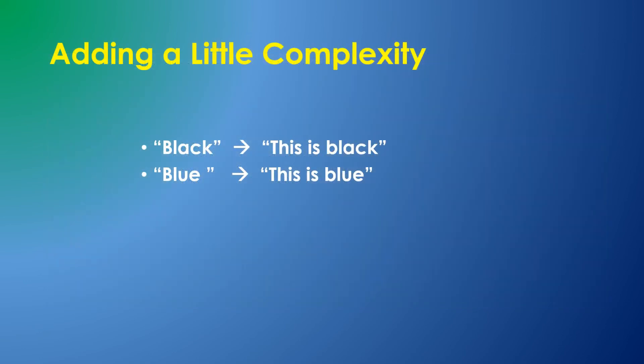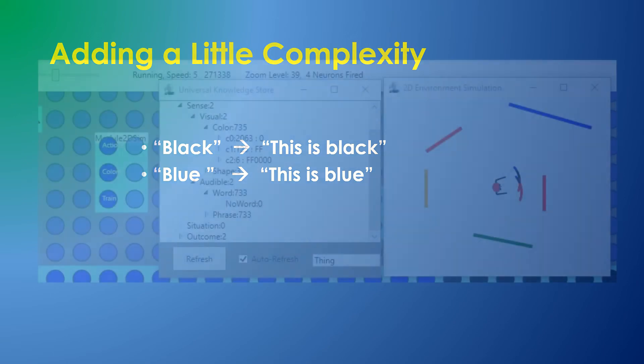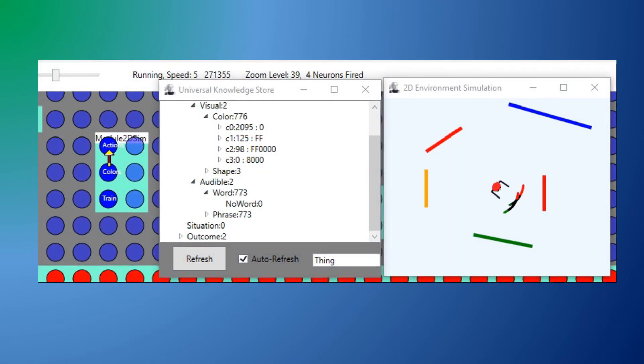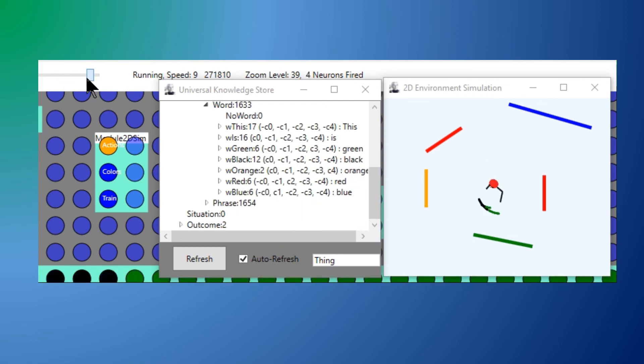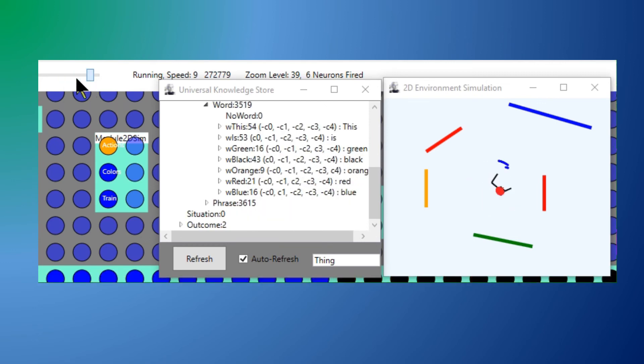In a slightly more complex example, instead of simply saying 'black' or 'blue,' the world simulator sends the phrase 'this is black' or 'this is blue.' When Sally first hears the phrase, the words are completely ambiguous. Sally can have no idea whether the color black is associated with the word 'black' or the word 'this' or the word 'is.' With the speed slider at the top left, I can speed up time to provide Sally with a larger number of samples. Then we can see that once again Sally has figured out that the word 'black' is associated with the color c0, etc., because over time this has emerged as the most likely association.